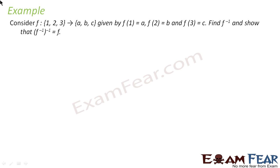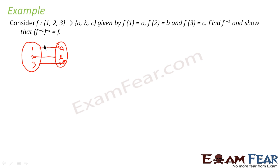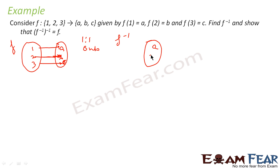Let us take one more example. There is a function f from {1, 2, 3} to {a, b, c}, where f(1)=a, f(2)=b, f(3)=c. To find f⁻¹, we first check invertibility. It is one-to-one because a, b, c each have only one pointer. It is also onto because there is no orphan element in the codomain. So it is invertible. Flipping it: f⁻¹ maps {a,b,c} to {1,2,3} with a→1, b→2, c→3.